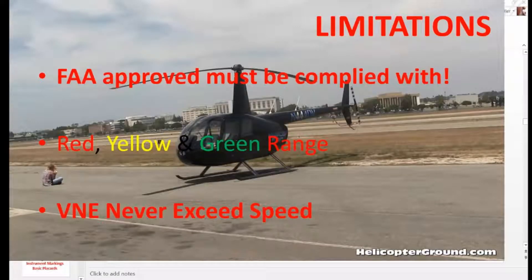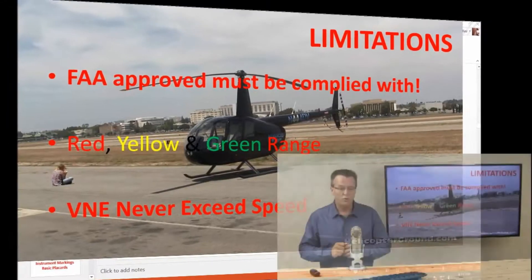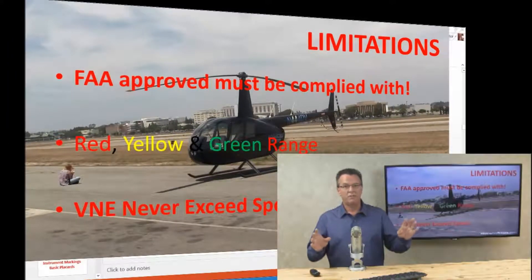So the limitations section, FAA approved and must be complied with. Understand the red, yellow, and green range, and the VNE never exceed speed. When you are in the green range, life is good.